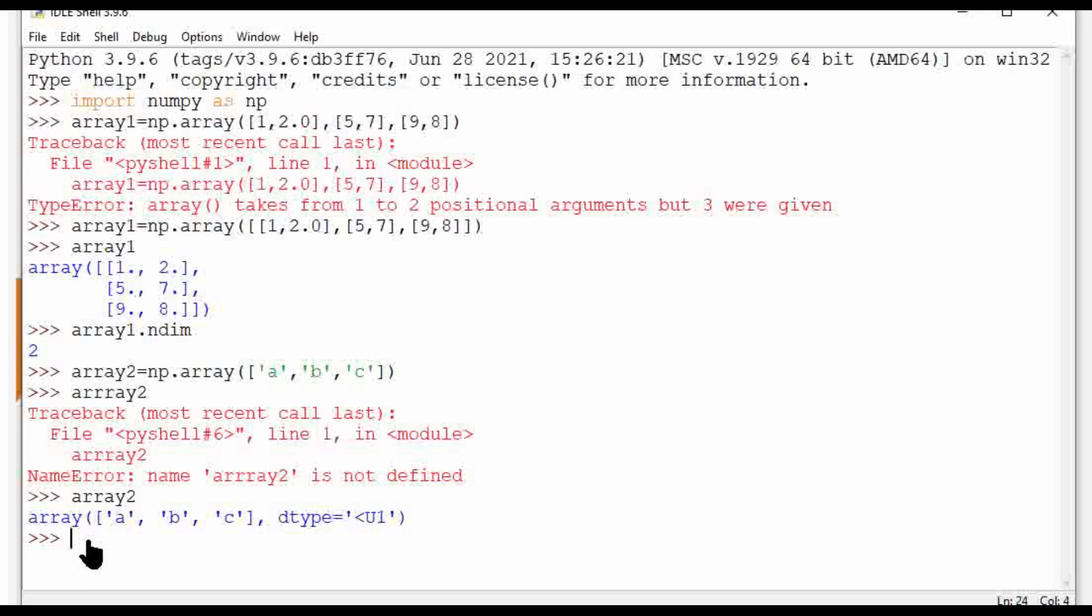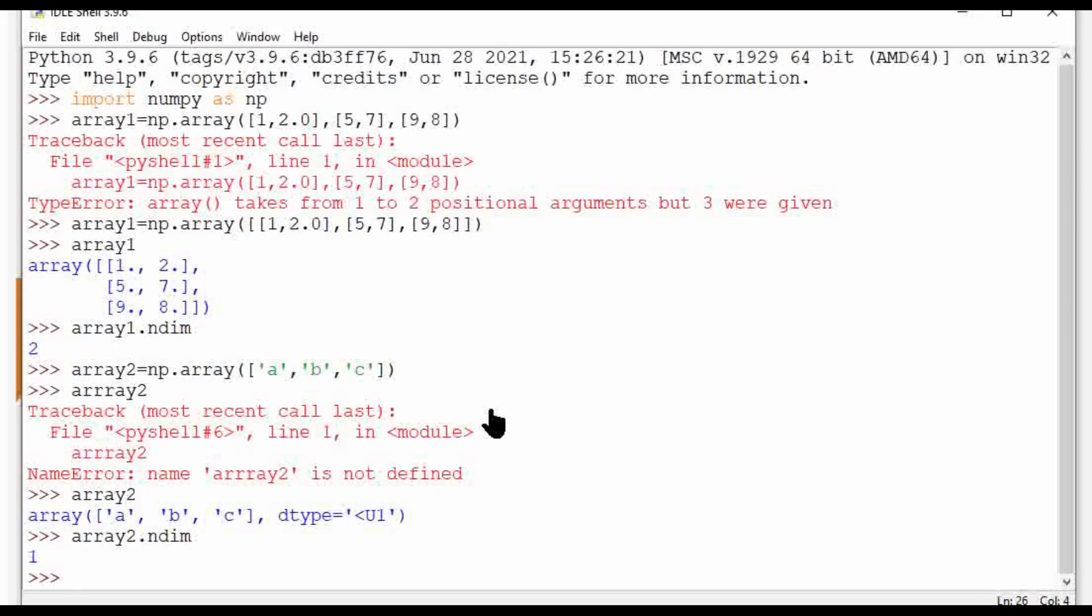Now I want to find what type of dimension is having array2. So I need to write array2.ndim method. Press the enter key. What is printed? One. It means this is your one-dimensional array. So I hope you have learnt NumPy ndim and two-dimensional array how to create.